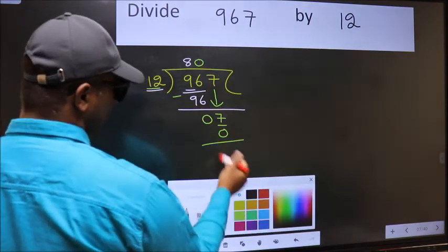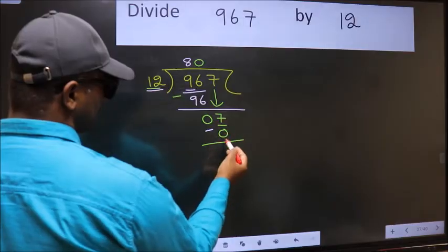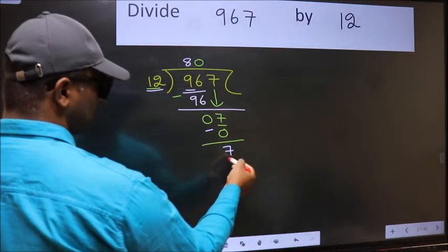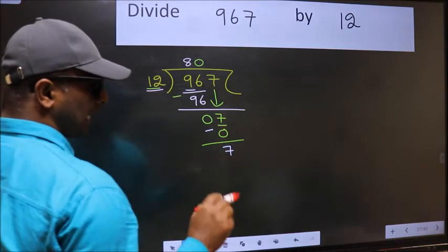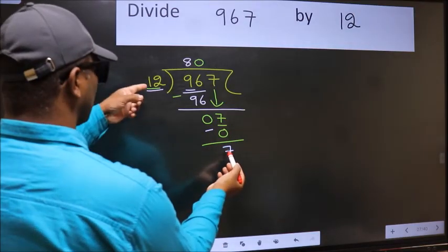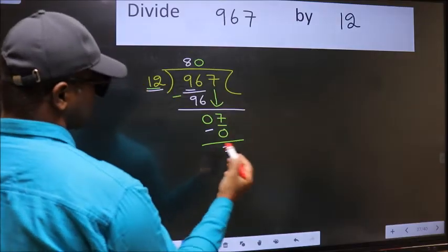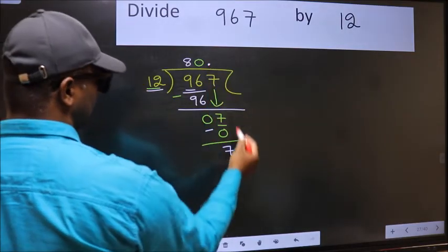Now you should subtract. 7 minus 0 is 7. Over here, we did not bring any number down, and 7 is smaller than 12. So now you can put dot and take 0.